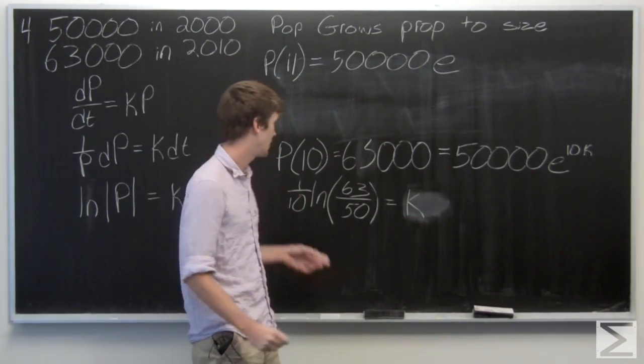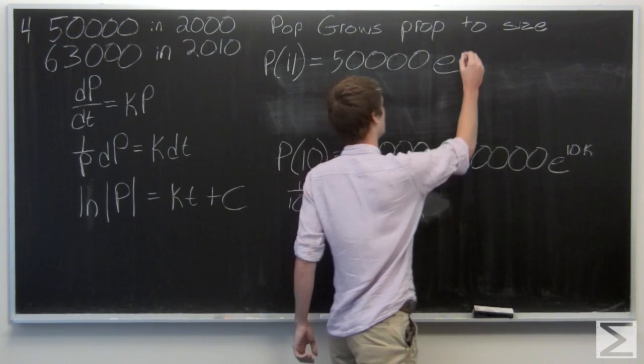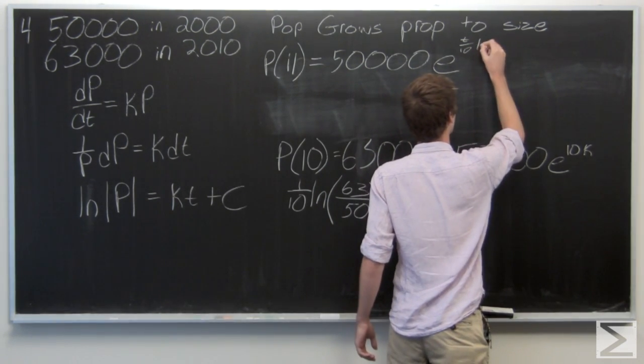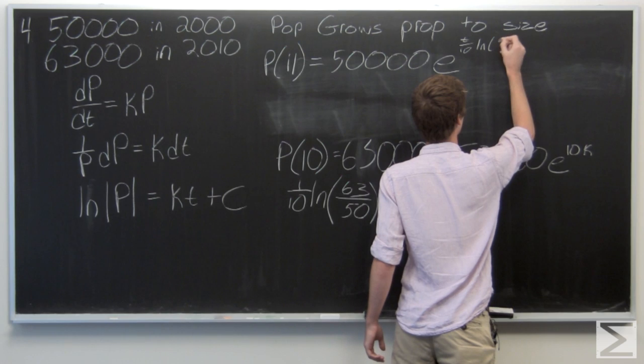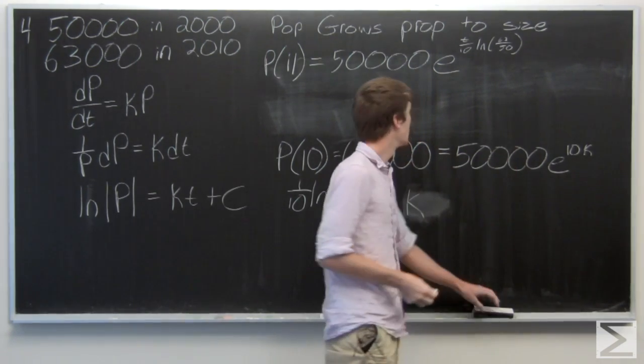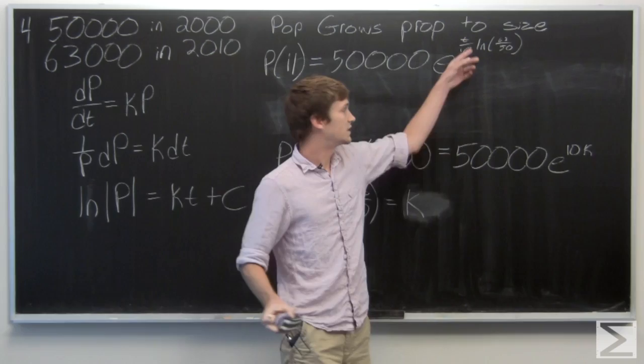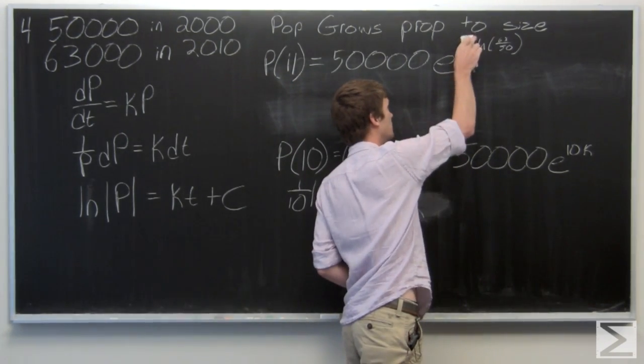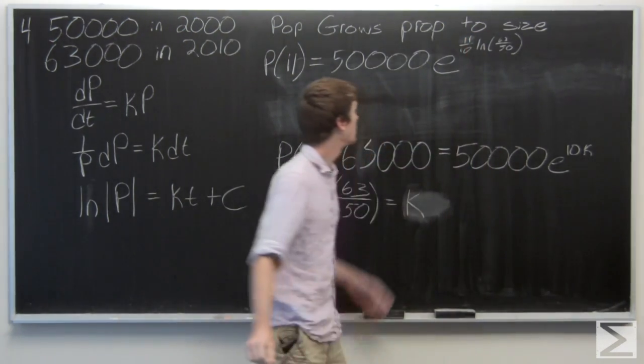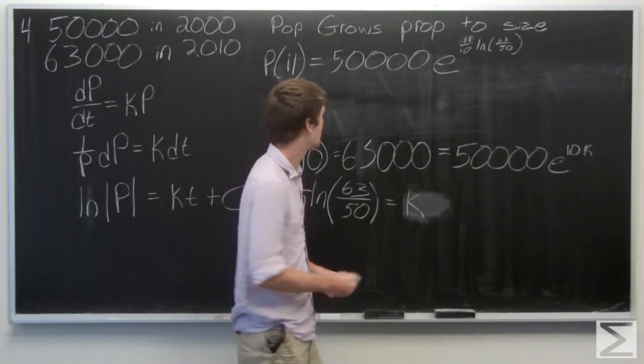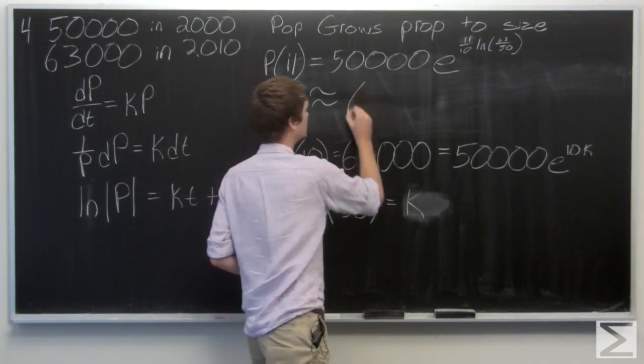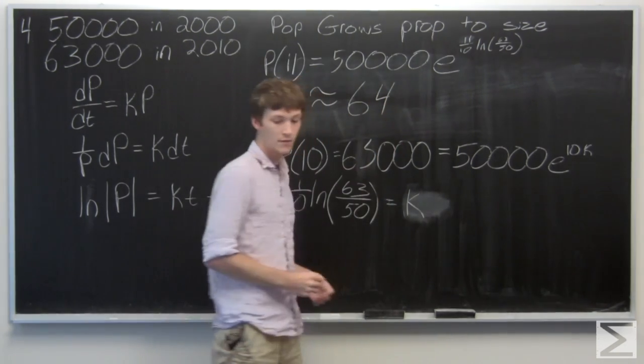Plugging in for our value of k, and of course t is 11 in this equation, when we find the solution to this we find that population is approximately 64,473.